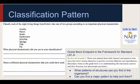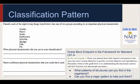Grade band endpoint for standard LS1.A: by the end of grade 5, plants and animals have both internal and external structures that serve various functions in growth, survival, behavior, and reproduction. The stress at this grade level is on understanding the macro-scale systems and their function, not microscopic processes. Classification is a key strategy to identifying patterns in science. In small groups or partners, students can find different ways to sort and classify the living things. How can you narrow it down to two groups? Can you label the groups? This question can also be adapted for middle school and high school science students.